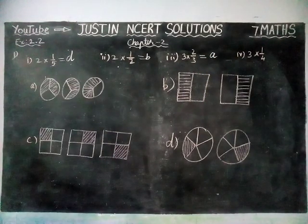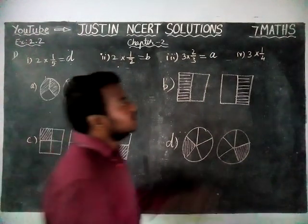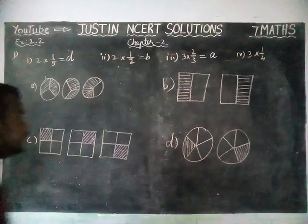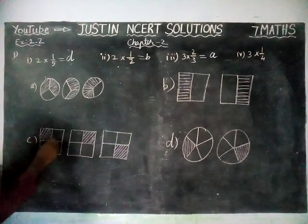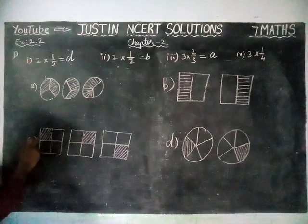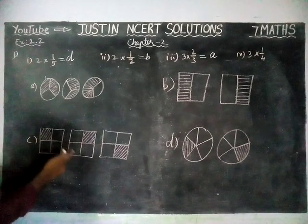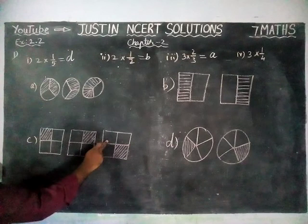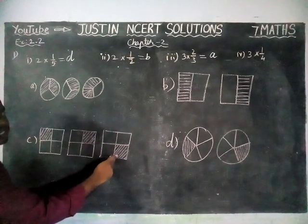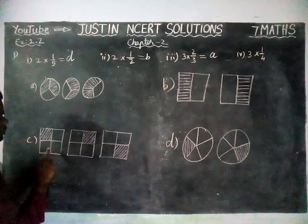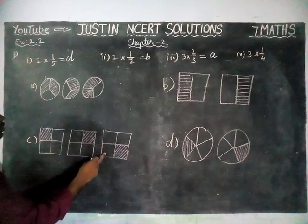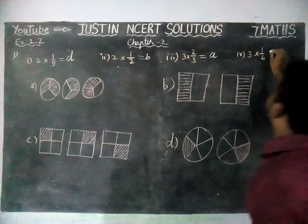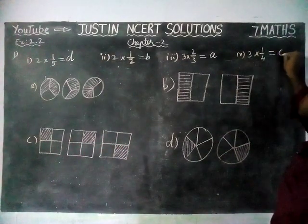Next, fourth question: 3 into 1 by 4. Out of 4, 1 is shaded. And here we have 1, 2, 3, 4 parts — out of 4, 1 part is shaded. And here also out of 4, 1 part is shaded. And in this also, out of 4, 1 part is shaded. We need 3 pictures — 1, 2, 3 pictures we have. So the correct answer is 3 into 1 by 4. Option C.